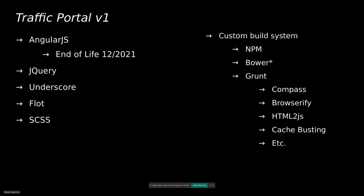The build system for Traffic Portal v1 is pretty complicated and convoluted. Before I dig into it, I want to say it's not really the fault of the developers who worked on it — they did a great job. If I'm blaming anybody, it's the 2010 web development ecosystem, which was very wild west. As an example, Traffic Portal v1 uses a custom build system. For package management we use npm and Bower — I put an asterisk next to Bower since as of a couple weeks ago it's actually been removed and everything is managed through npm.